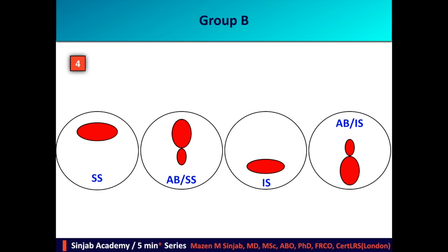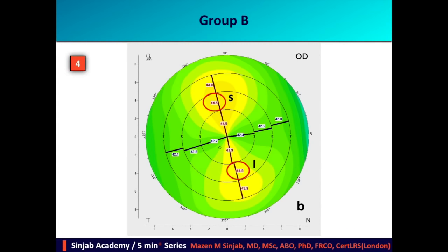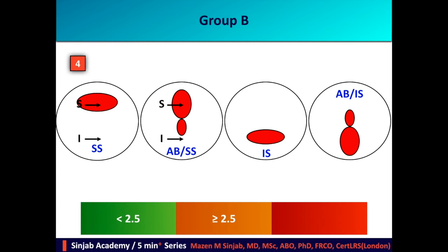In Group B, although the patterns are asymmetric, not every asymmetric pattern is abnormal. We have to study the two opposing points in the second circle of numbers on the steep axis and see the difference in magnitude between these two points. In superior steep patterns, if the difference is 2.5 diopters or more, it is considered a moderate risk factor. In inferior steep patterns, the cut-off point is 1.5 diopters.